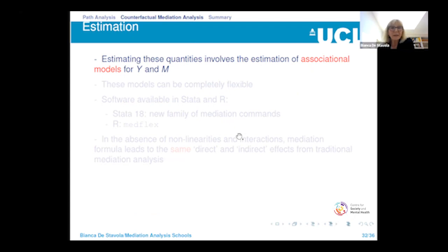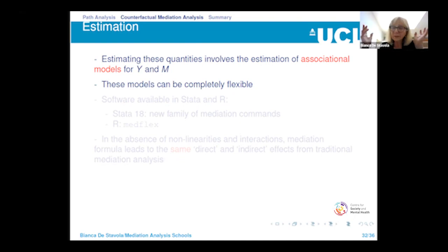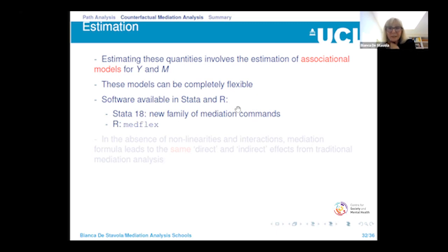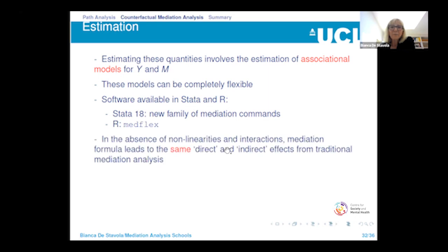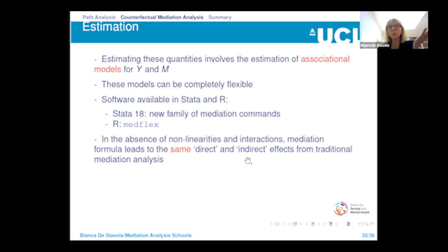Estimating these quantities does involve fitting regression models, but they are used for the purpose of identifying potential outcomes. We are very free — we can use interactions, nonlinearities, anything — all we do is try to predict those potential outcomes. Fitting these models in Stata or R is accessible. There are many commands available for this approach. A minor point: if your model is simple — no intermediate confounders, everything continuous, no nonlinearities or interactions — you get exactly the same results as the direct and indirect effects from path analysis. This is a plus: it means we can justify path analysis in terms of the formal definition of directed indirect effects, rather than informally as before.